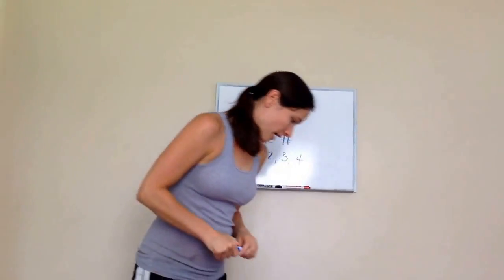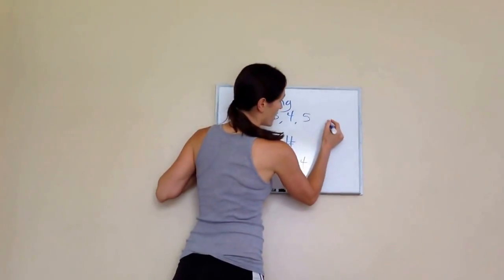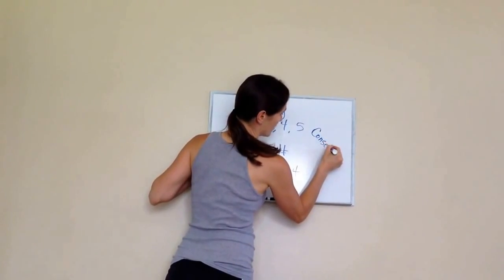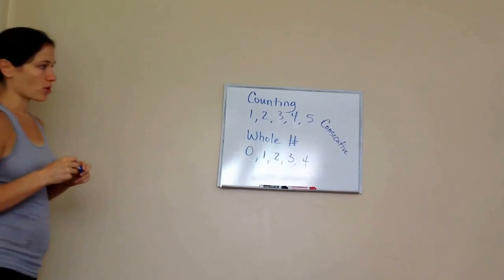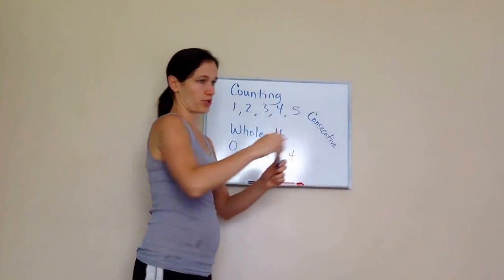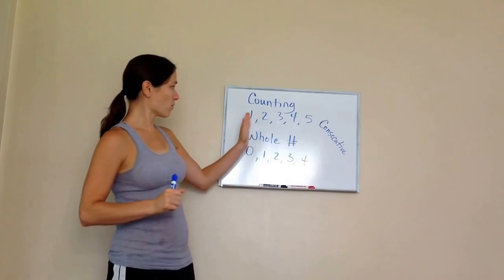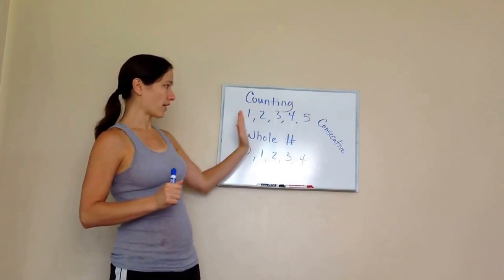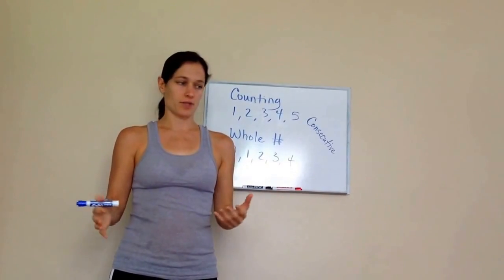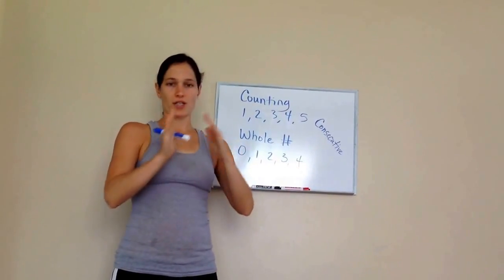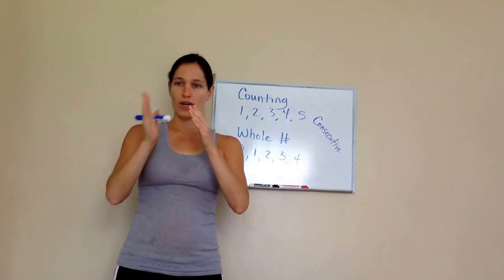There's something called consecutive — it's a weird name, but consecutive numbers are numbers that come after each other. So in a number sequence it would look like one, two, three, four, five. They all come right after each other consecutively. Or if we were later on in counting, we would say 28, 29, 30. Those would be consecutive because they come one after the other.